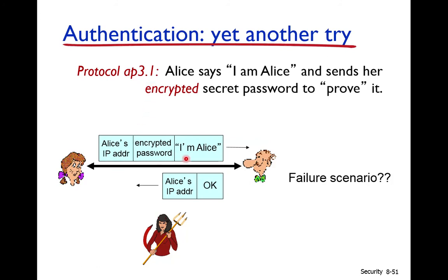In Protocol AP 3.1, Alice sends the message 'I am Alice' with her IP address and her password in encrypted form. When Bob receives it, Bob decrypts the password and can verify the message is from Alice. If Trudy sees this message, she can get Alice's IP address but cannot understand the encrypted password, since only Alice and Bob know the decryption key.